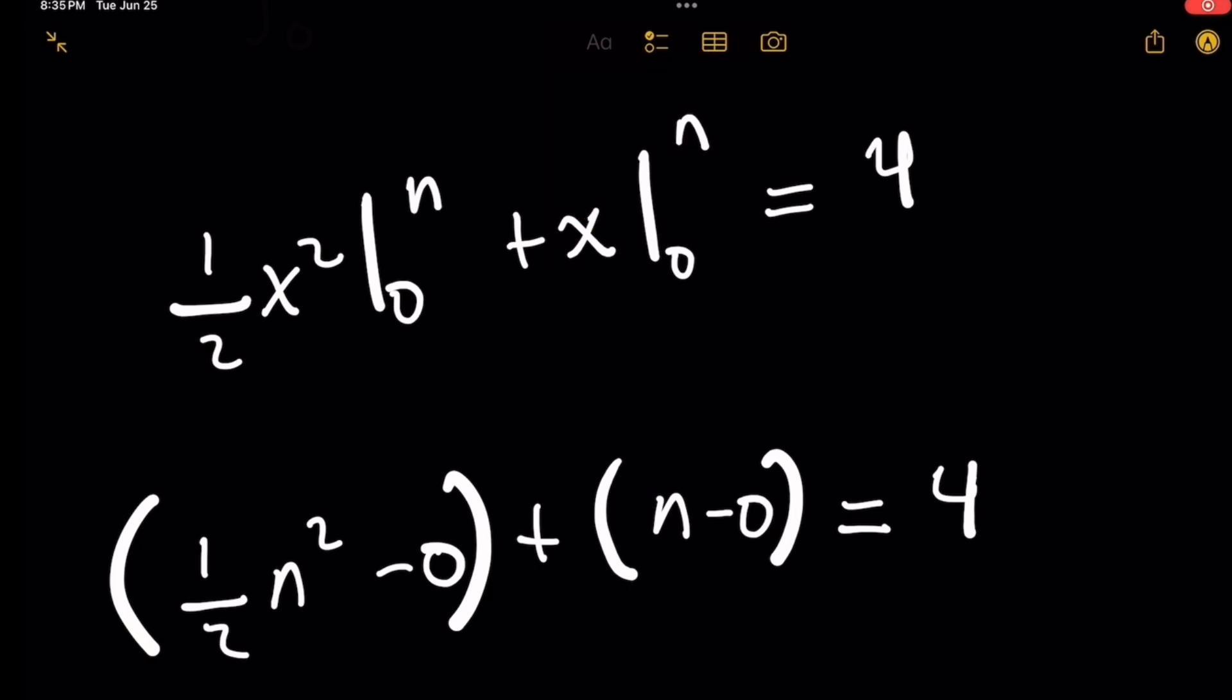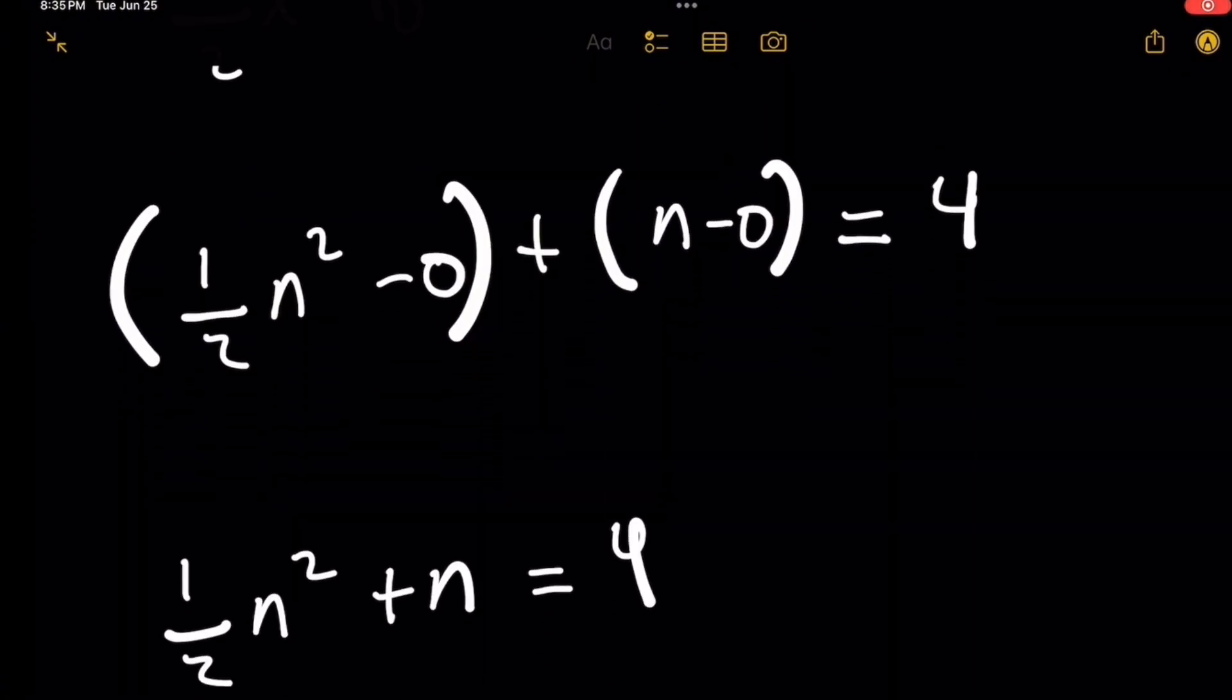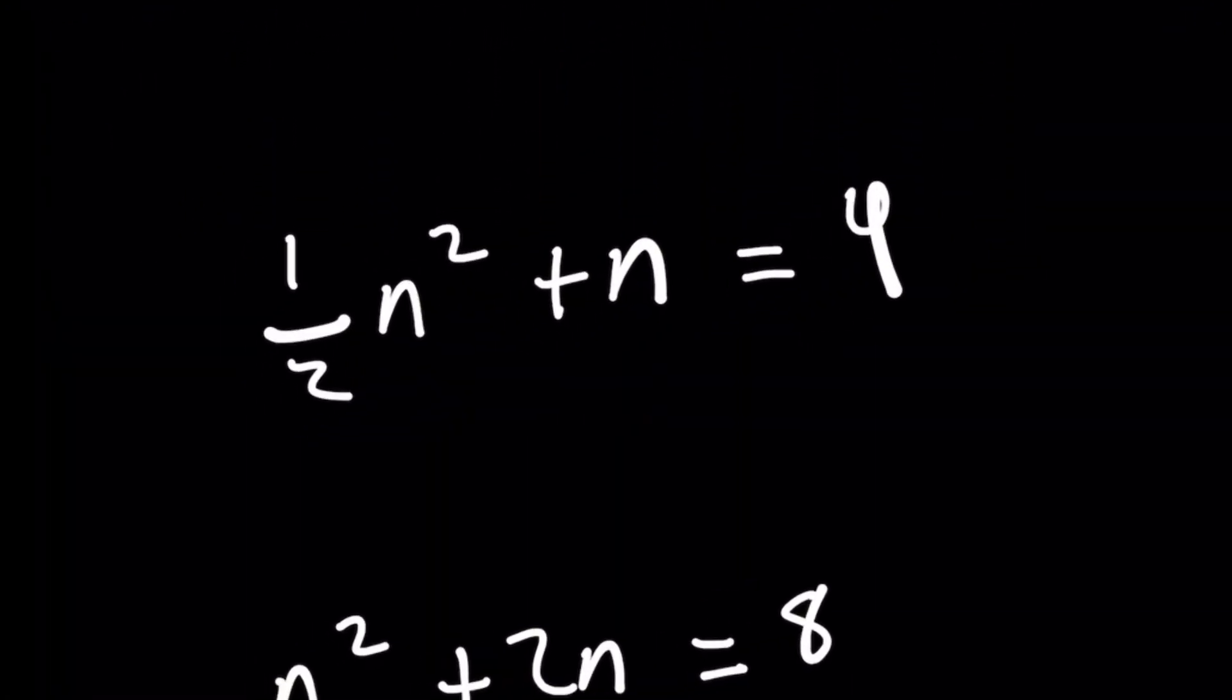Well, that's awesome because this simplifies even more. The 0 terms just go away. And now we're left with 1 half n squared plus n equals 4.